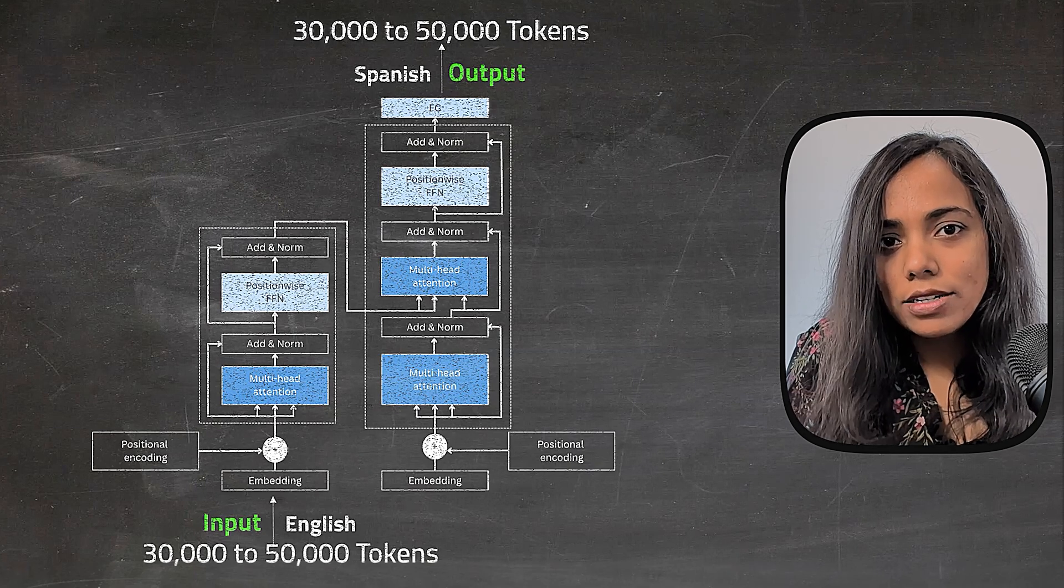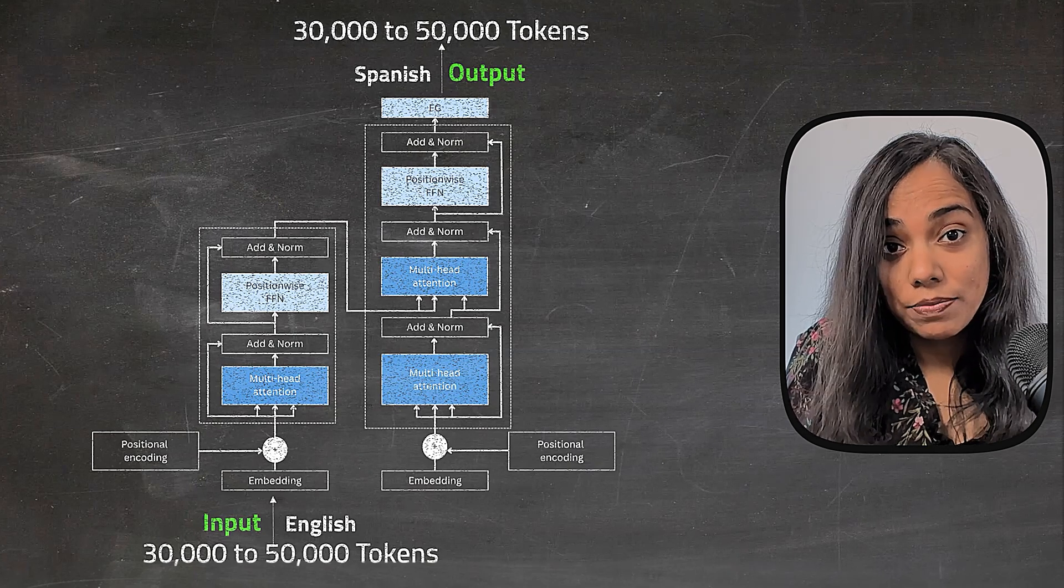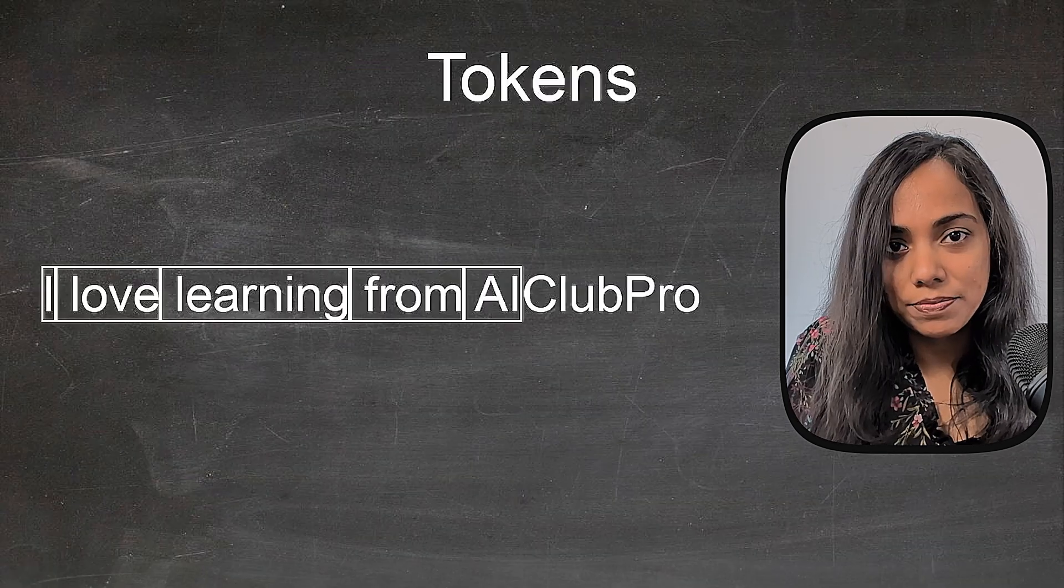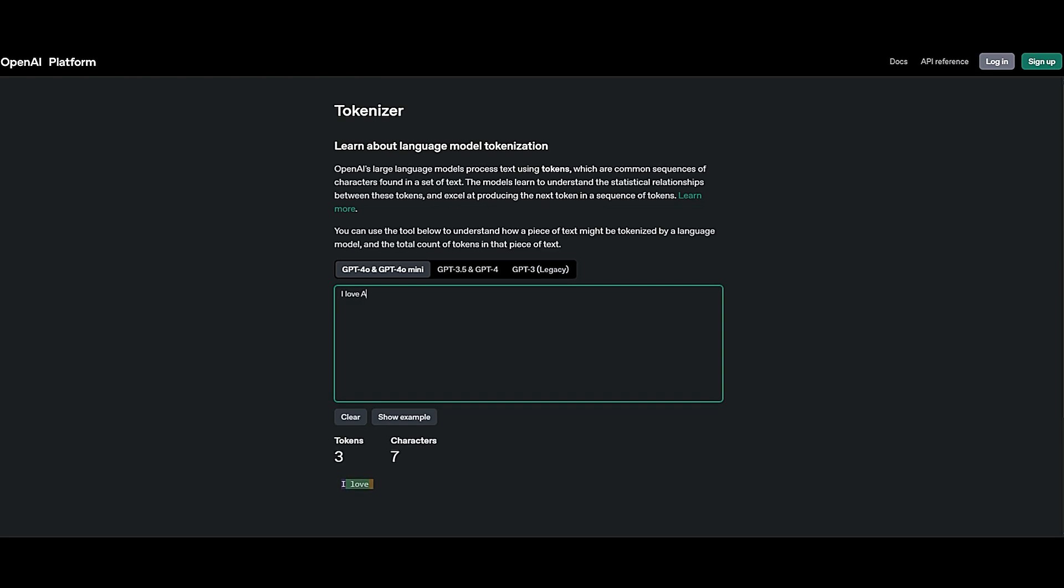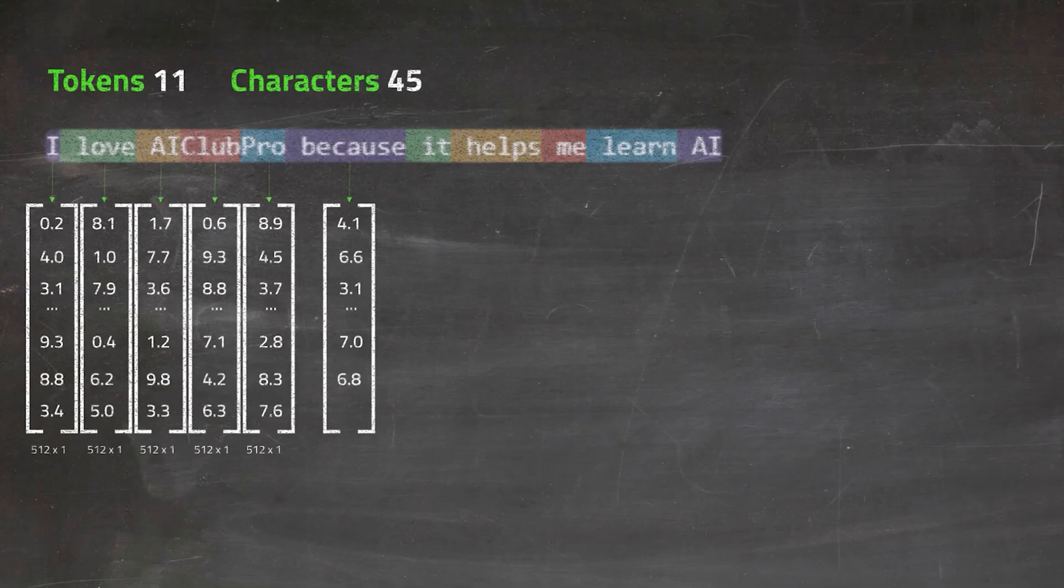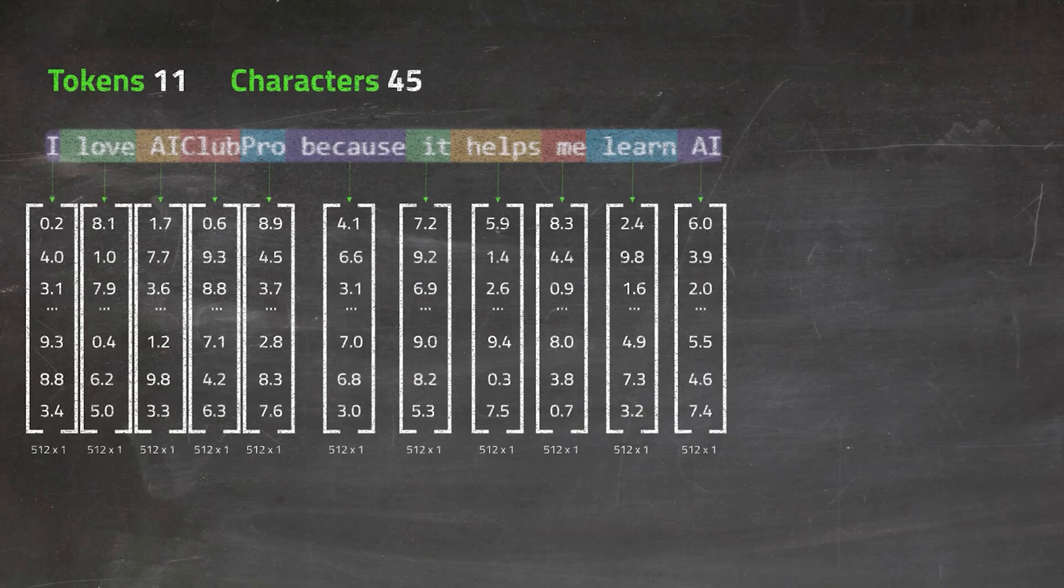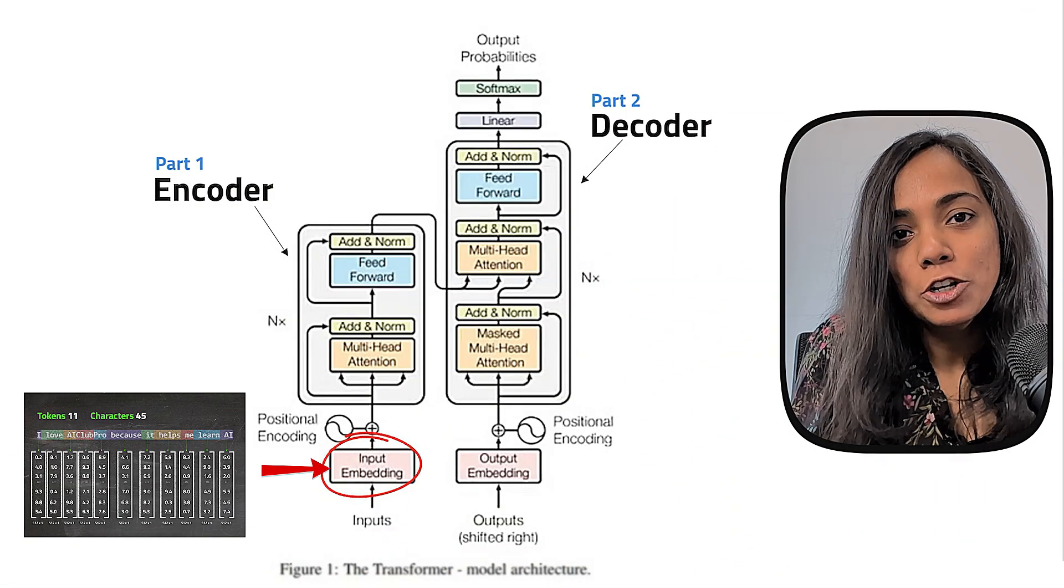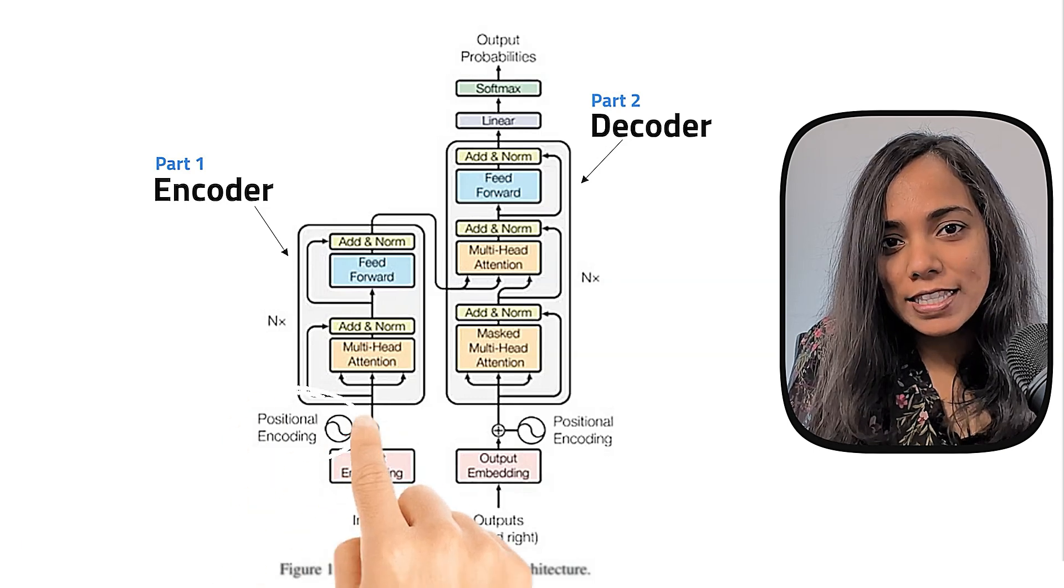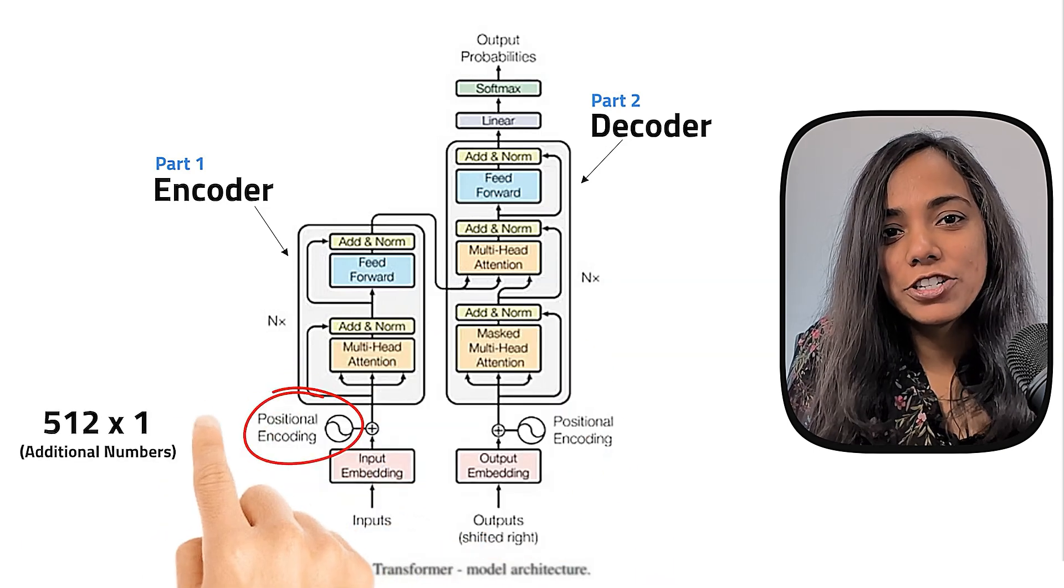These tokens aren't always whole words. They are often smaller units known as subwords. Each token gets converted into a numerical vector, which is a list of numbers, which happens to be 512. So there are 512 numbers that represent numerically every token.